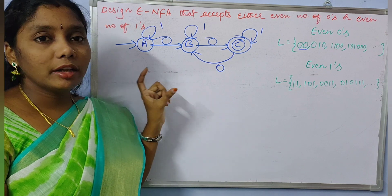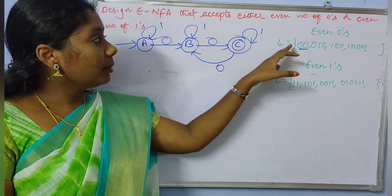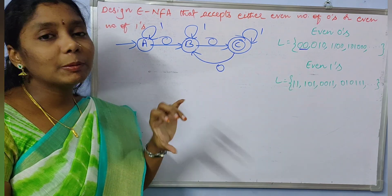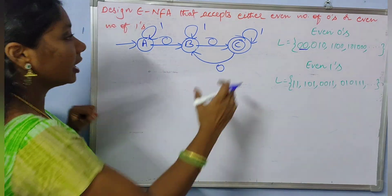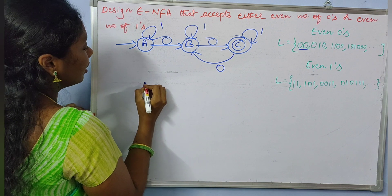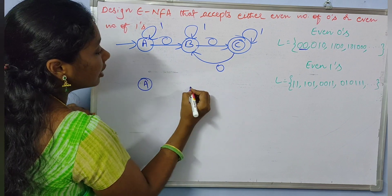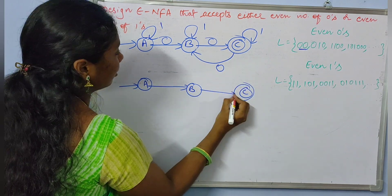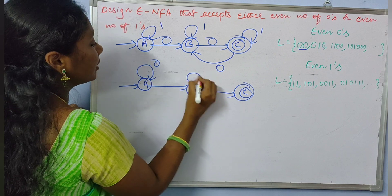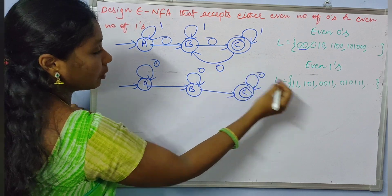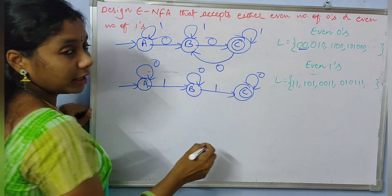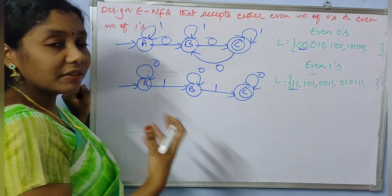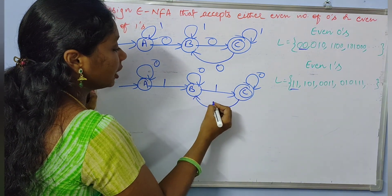Now we need to construct the NFA for accepting all even number of ones. For even number of ones, the NFA is simply the same design — just replace zeros with ones and ones with zeros. The minimal string becomes '11', and since there is no restriction on number of zeros in this NFA, we can have any number of zeros as self-loops. To produce all even number of ones, we need a transition from C back to B on input one.